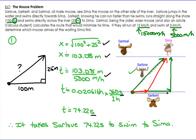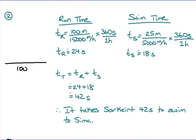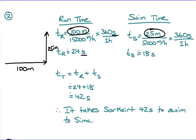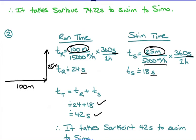Now Sarkirt — he runs 100 meters, then swims 25 meters. Taking 100 meters divided by the run speed and converting to seconds gives 24 seconds for the run. Dividing the 25-meter swim distance by the swim speed and converting gives the swim time. Adding both together gives a total time of 42 seconds. So Sarkirt is at 42 seconds versus Sarlav's 74 — poor Sarlav.